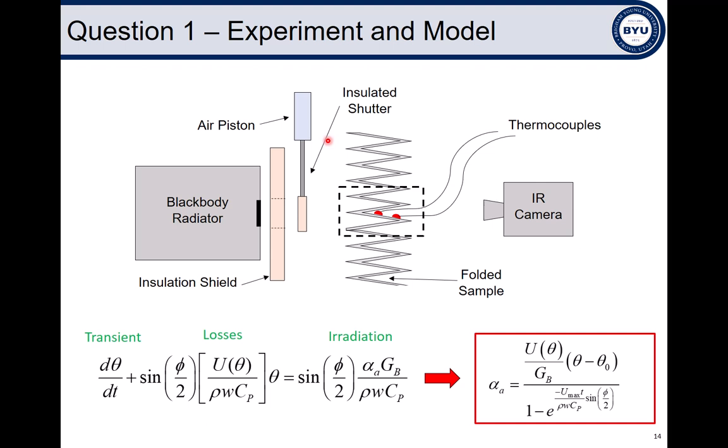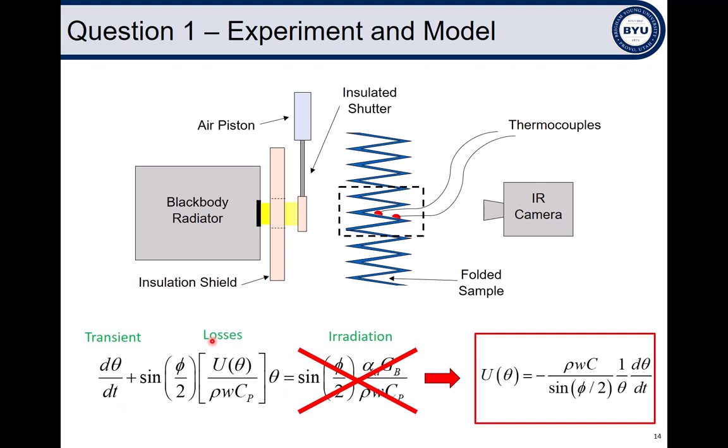A piece of aluminum shim stock was folded into an accordion tessellation and exposed to thermal radiation from a laboratory black body radiator. An energy balance of the heated control volume yields this governing equation, which gives the apparent absorptivity of the surface as a function of temperature measurements, expressed here as theta. However, this equation also requires the overall heat transfer coefficient of the system, which is given here as u. So, to find that value, a shutter was activated and the surface was allowed to cool. Rearranging the energy balance of the cooling control volume gives the overall heat transfer coefficient as a function of surface temperature, which is exactly the value we needed to calculate apparent absorptivity.